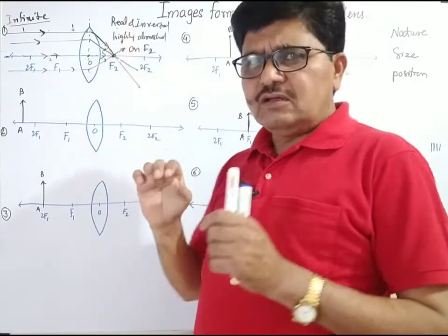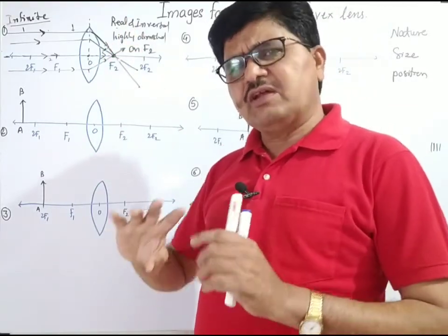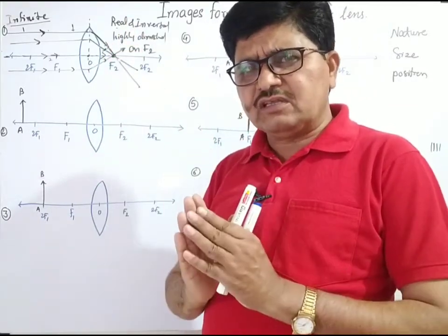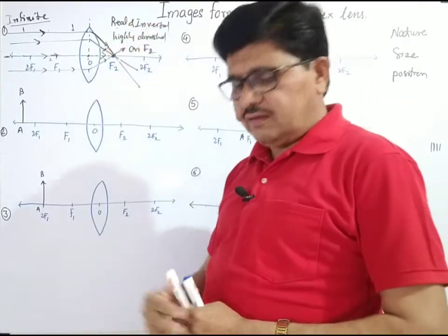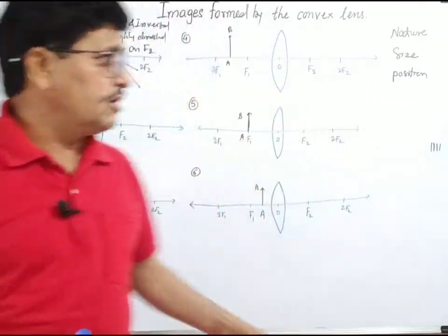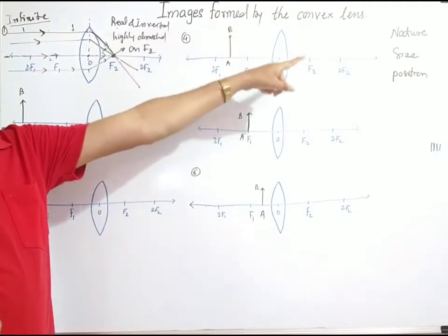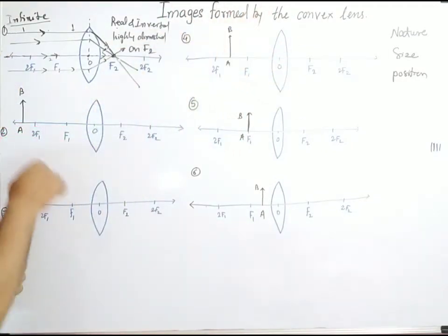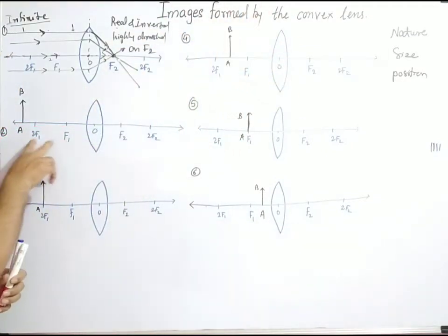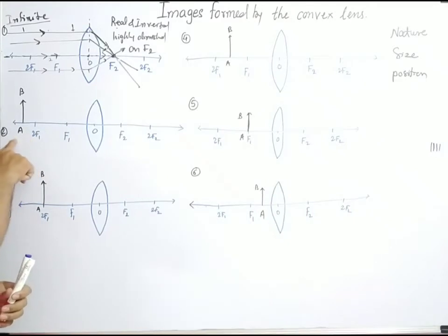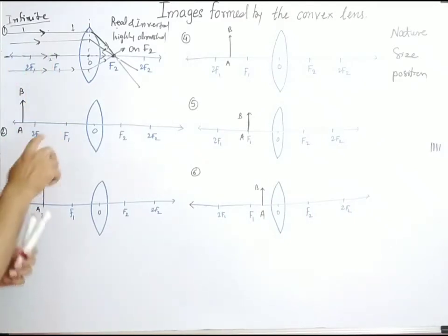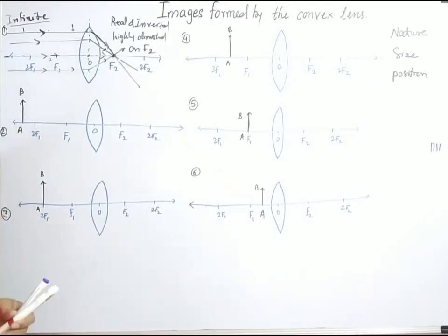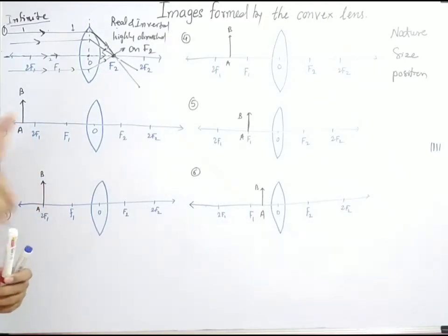The nature of the image — if the refracted rays are actually meeting together — the image is always real and inverted. These three factors considered are nature, size, and position. Then second case: object is placed just beyond 2F. Beyond 2F, you can consider two rays.